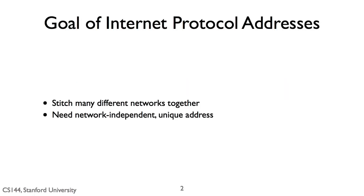The original goal of the Internet Protocol was to take many different networks and stitch them together. For this to work, the protocol needed a way to refer to a computer that was independent of the network it was on and was unique. So a computer on an IBM network and a computer connected to a router or a serial line can talk to each other and need a way to address each other. Today, IPv4 addresses are a bit more complicated — they're not totally unique due to special cases and uses — but for now let's just assume that they're unique.